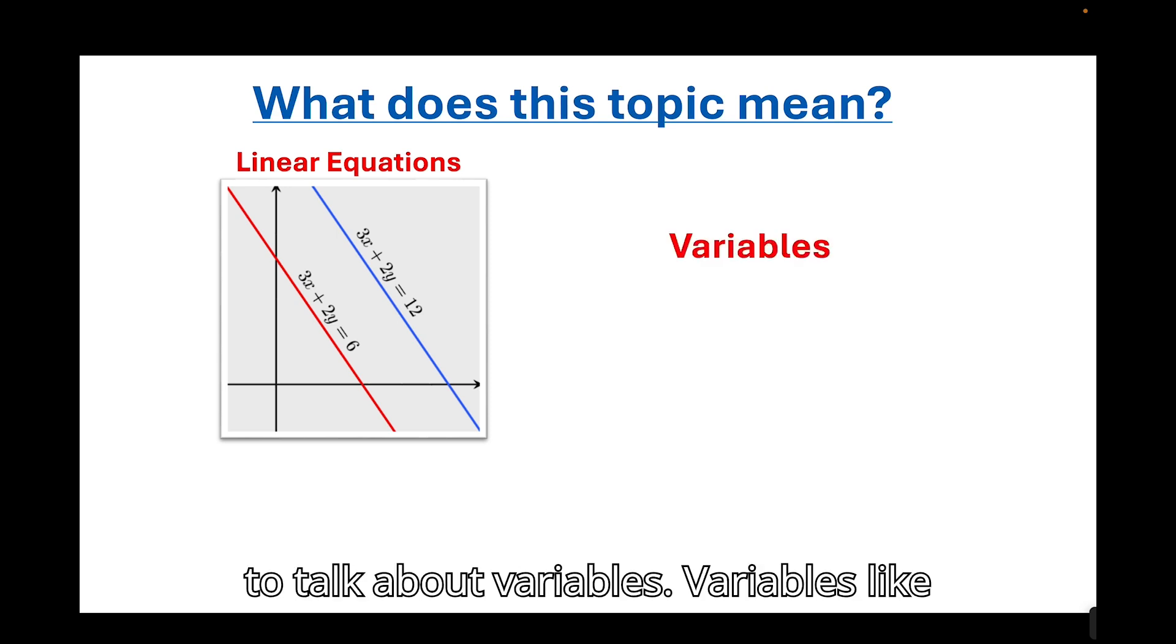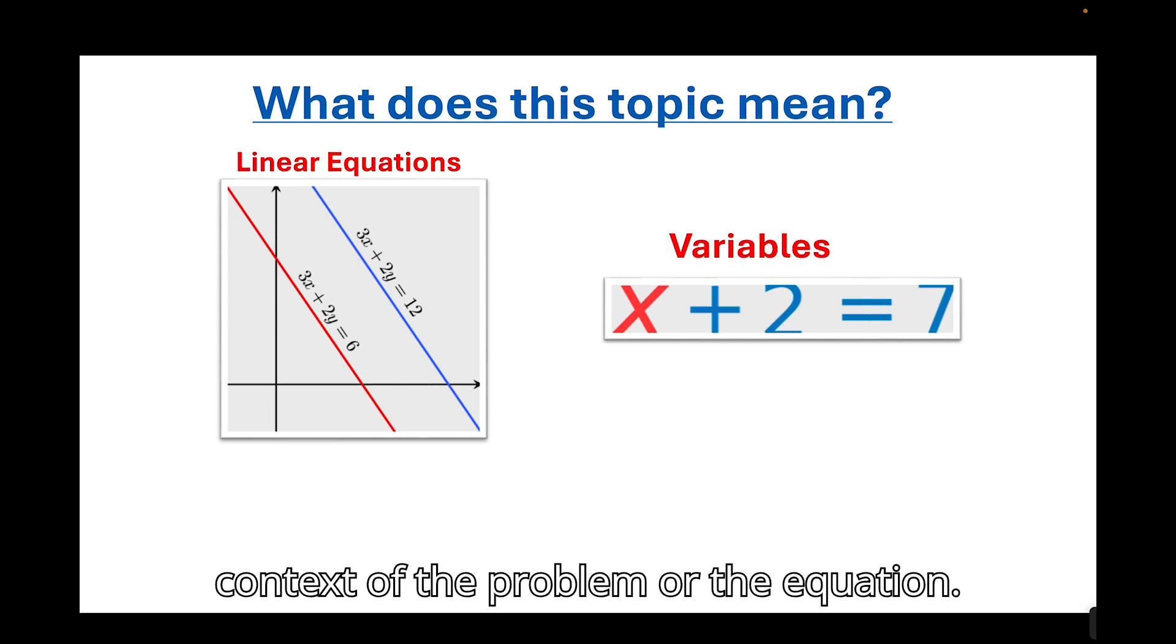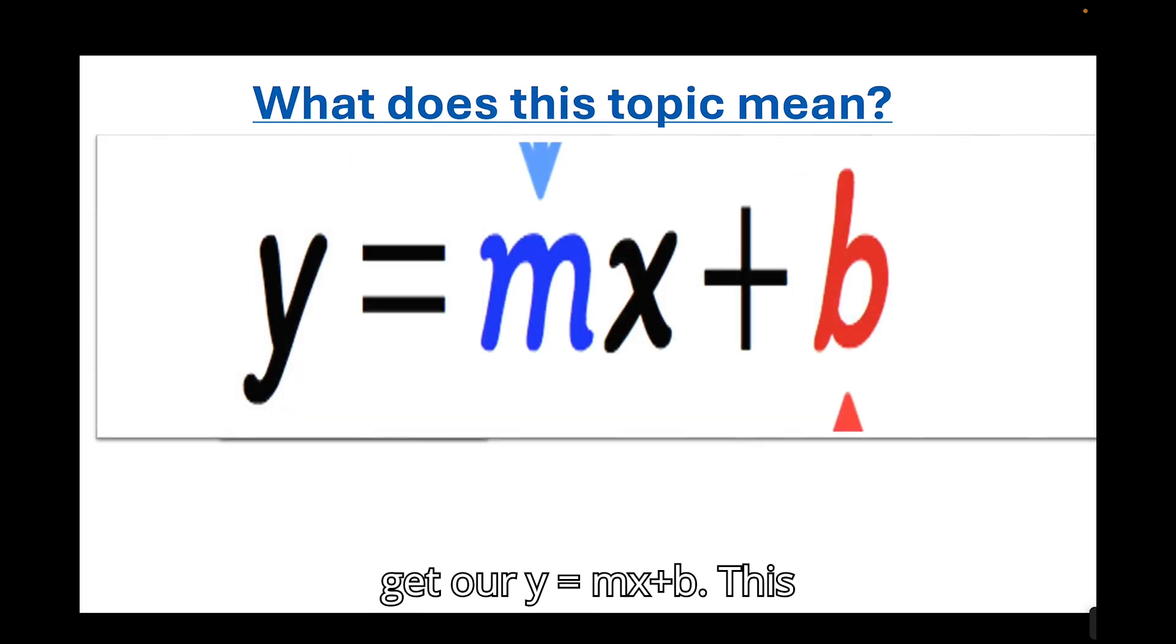But first, we need to talk about variables. Variables, like in this question where the variable is x, is some number that can change in the context of the problem or the equation. So when you combine these two concepts together, you get linear equations with variables. It's a particular one variable with this, and this is where we get our y equals mx plus b. This is our slope-intercept equation. M is mainly going to be our variable that's going to be changing, while b is going to be our y-intercept.